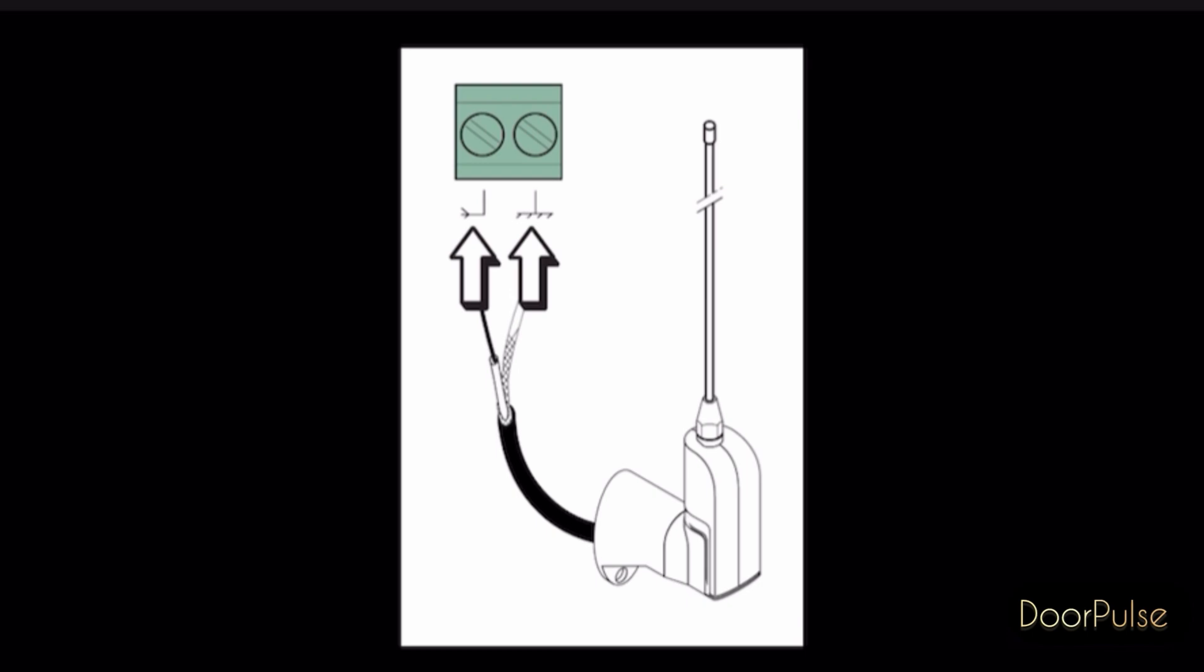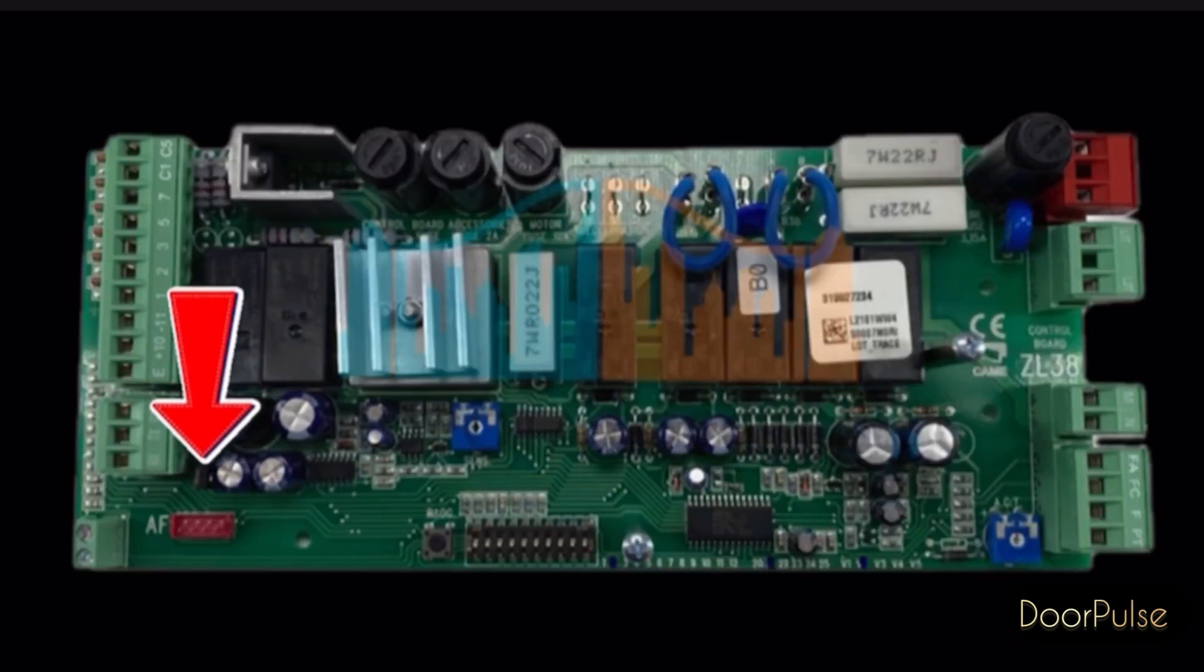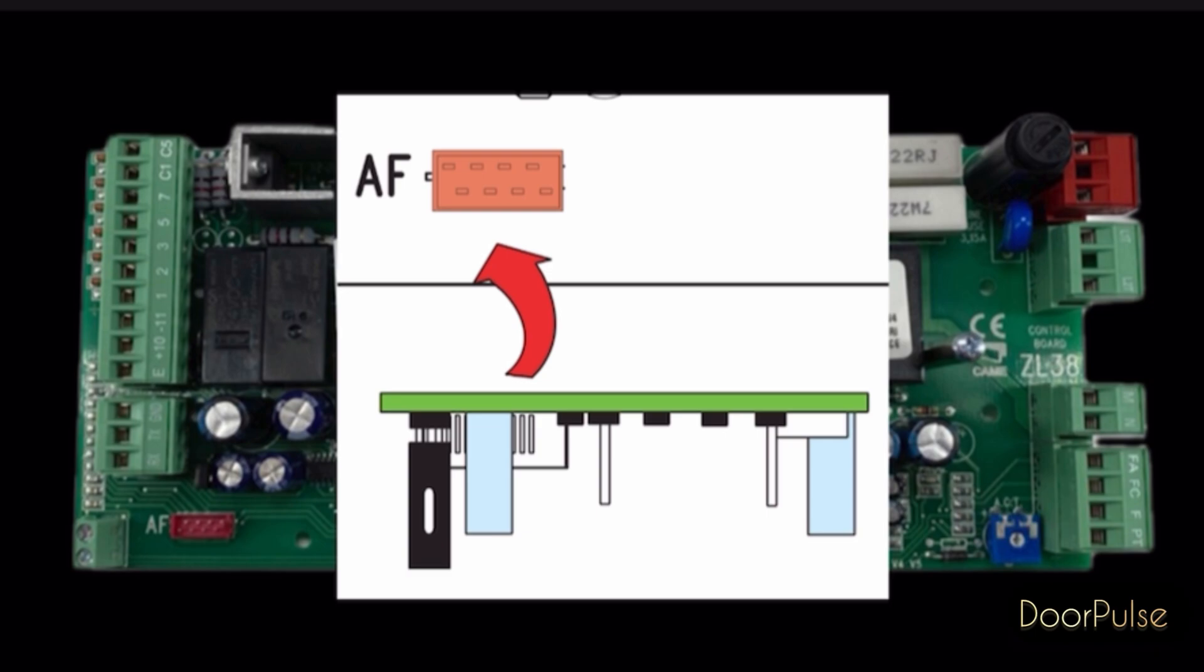Antenna connections: see the diagram same connect like this. Solid wire for signal, shield wire for ground. Insert AF card, either AF43S or AF86.